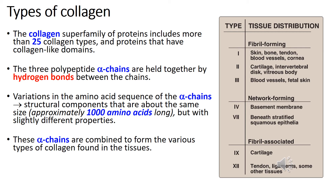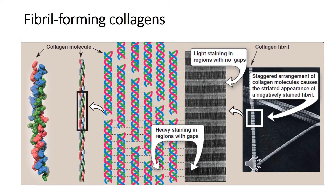For example, the most common collagen type 1 contains two chains called alpha 1 and one chain called alpha 2, whereas type 2 collagen contains three alpha 1 chains. The collagen can be organized into three groups based on their location and function in the body. There are three main types of collagens: the fibril-forming collagens, the network-forming collagens, and the fibril-associated collagens.